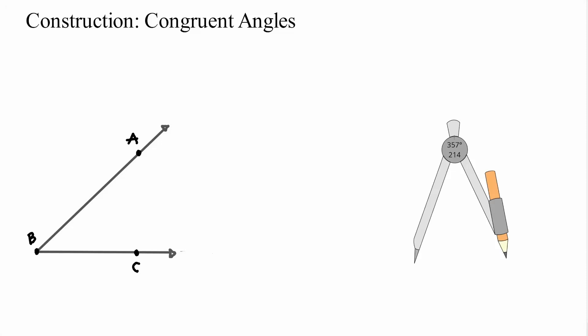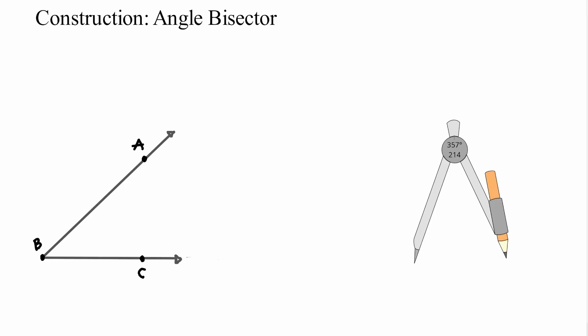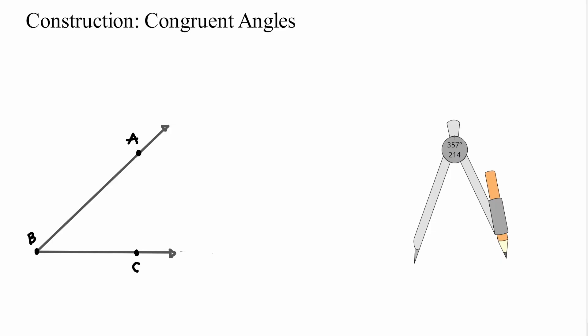Welcome. In this video we're going to be discussing two types of construction: the construction of congruent angles and the construction of angle bisectors. Let's start by looking at the idea of congruent angles. The word congruent all it means is equal. So if we want to construct a congruent angle, we want to use our compass and copy this angle and paste it somewhere else — recreate an equal angle from the angle that we are given, which in this case is angle ABC.